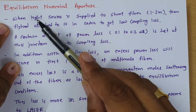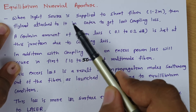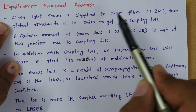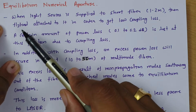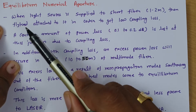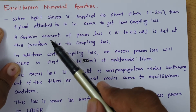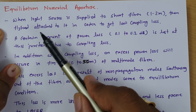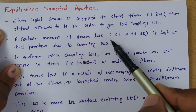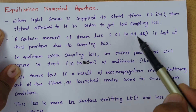When we give light source to an optical fiber of short length, around 1 to 2 meters, we usually attach fly leads. Those fly leads are attached to get lower coupling losses. You will observe a certain amount of power is getting lost because of coupling loss, and that power loss is in the range of 0.1 to 0.2 dB.